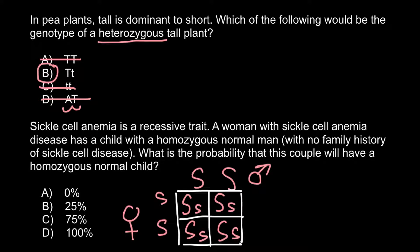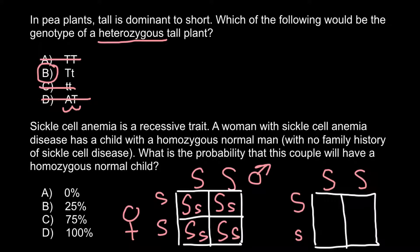Now let's build a second Punnett square, suggesting the female is heterozygous — a carrier who also expresses the disorder to a small extent. Her genotype is capital S, small s, and the man's genotype is capital S, capital S. We build the Punnett square to see the probability of genotypes in their progeny.